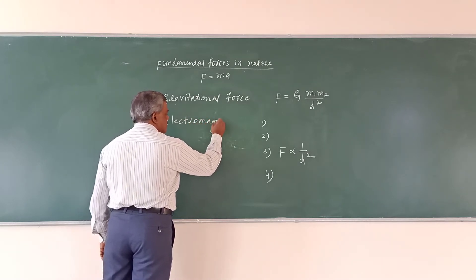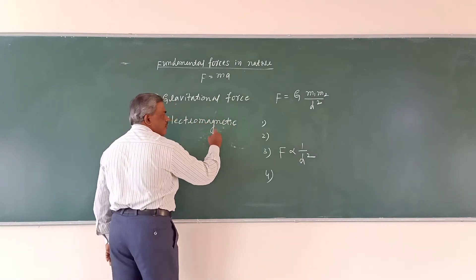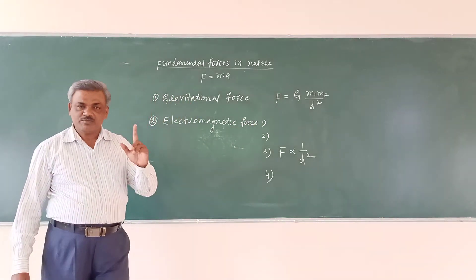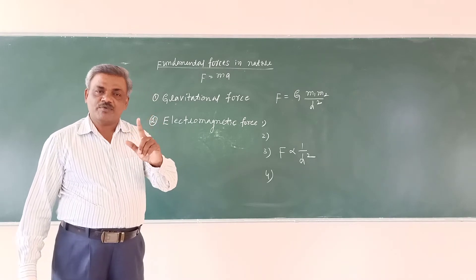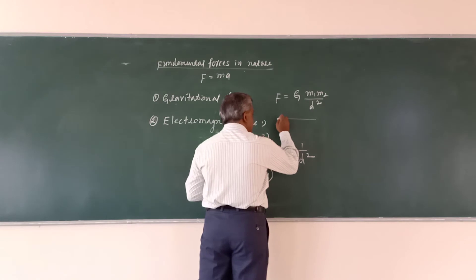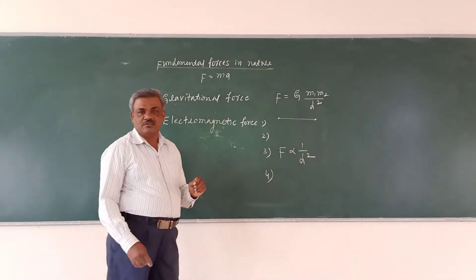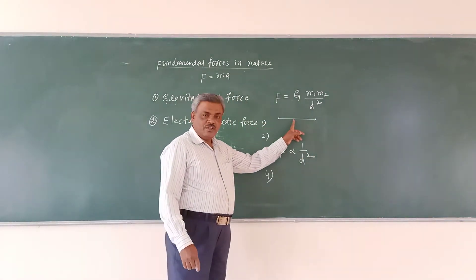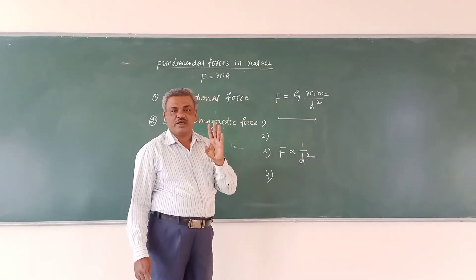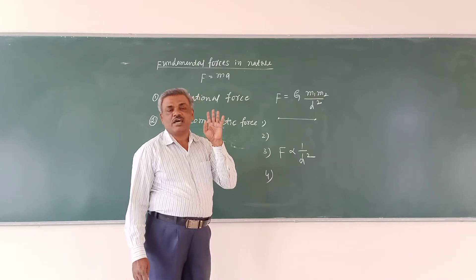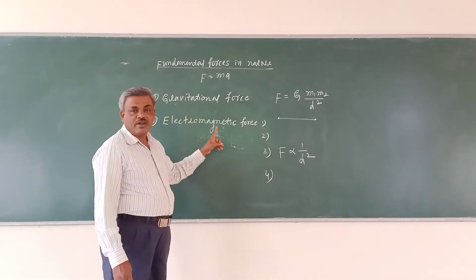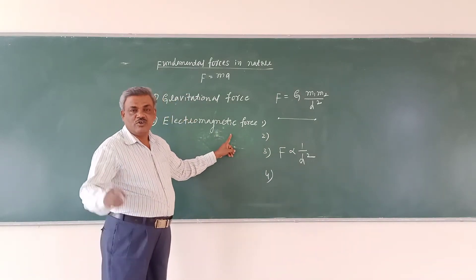Electromagnetic force. The force between any two charged particles is called electromagnetic force. There are two charged particles — electron is a negatively charged particle, proton is a positively charged particle. The force between any two charged particles is called electromagnetic force.